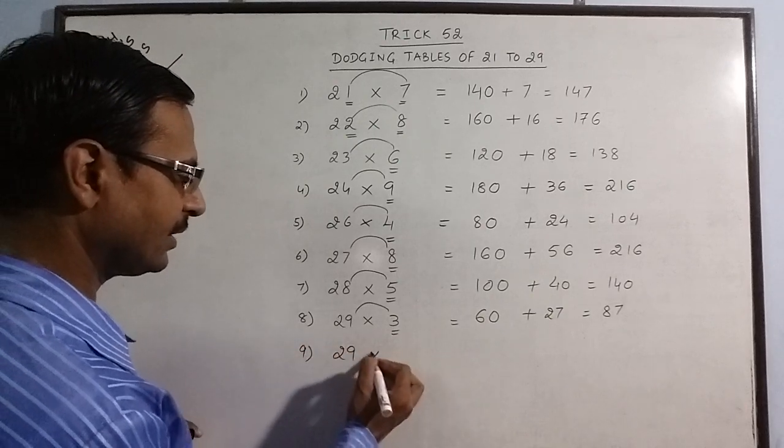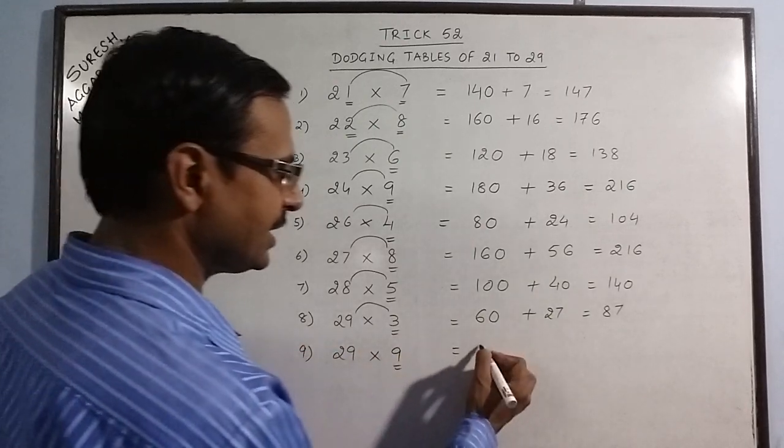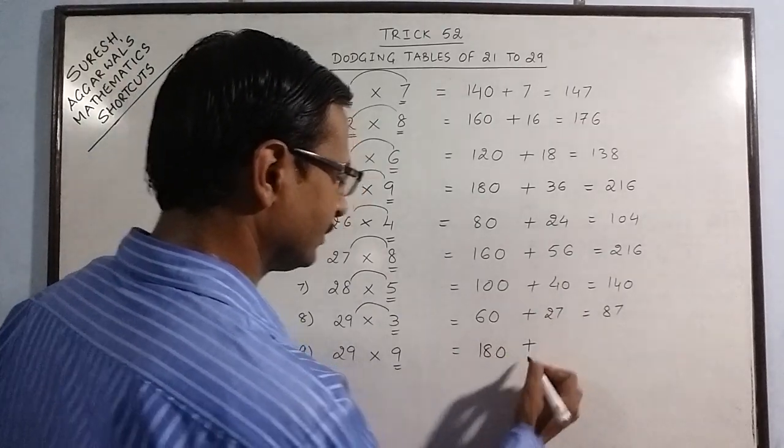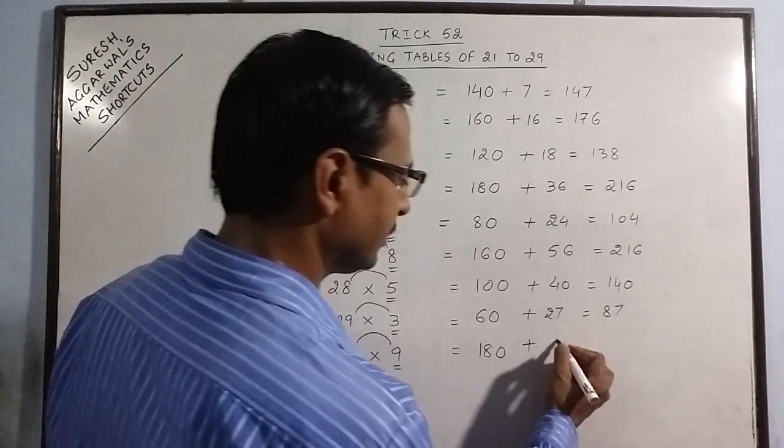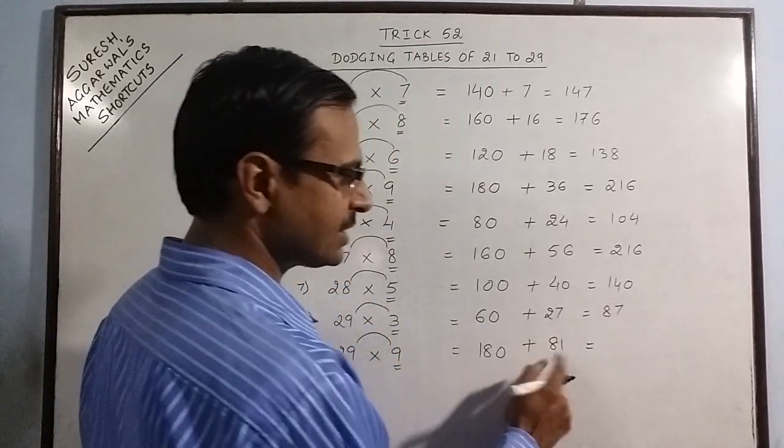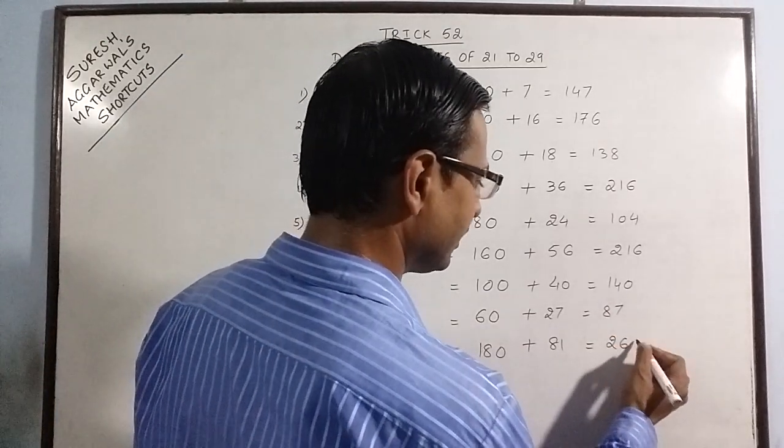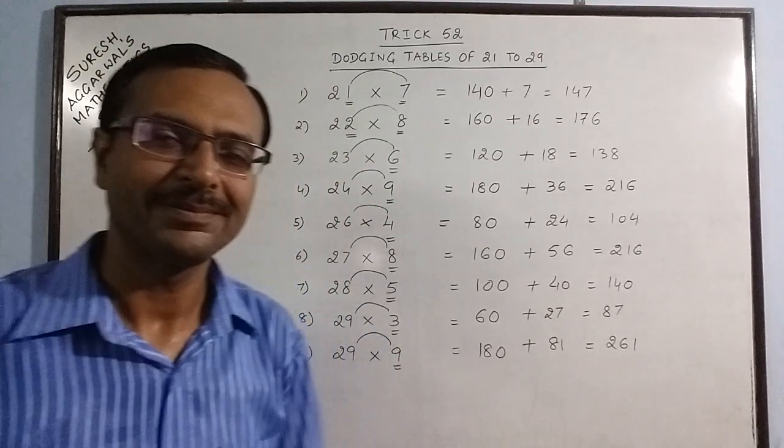29 nines: double of 9 is 18, put a 0. 9 nines are 81. 18 plus 8 is 26, so 261 is the required product.